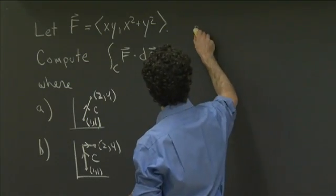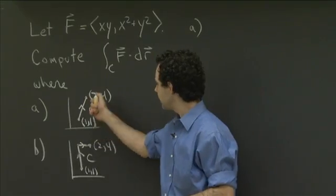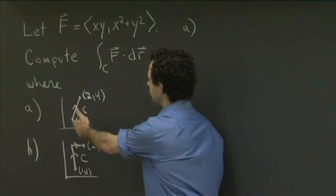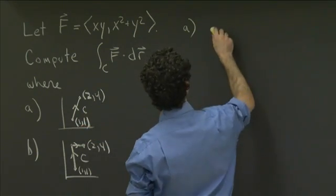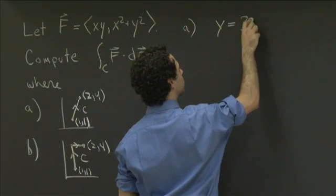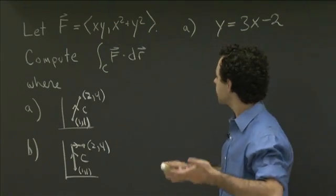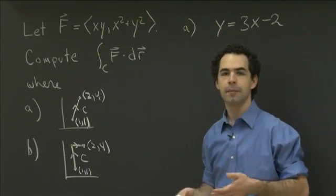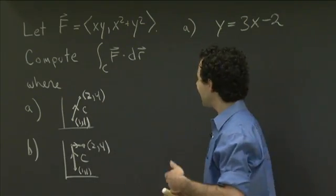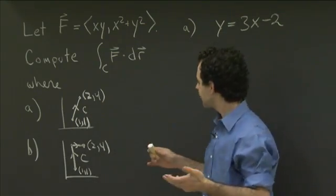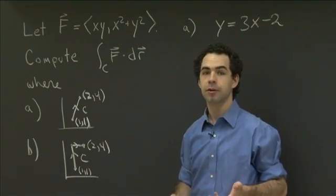In part A, we need to parametrize the curve in question. This is a straight line through the points (1,1) and (2,4). This line has equation y equals 3x minus 2. We need to choose a parameter that will give us this segment of the line. Since y is already written in terms of x, it's natural to take a parameter equal to x.